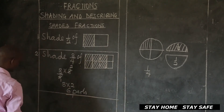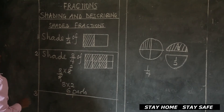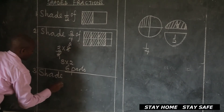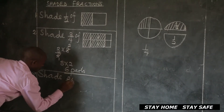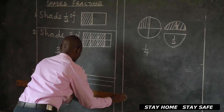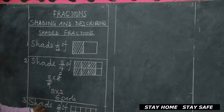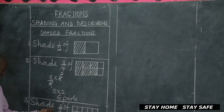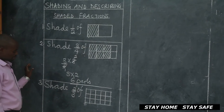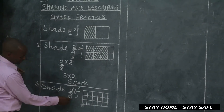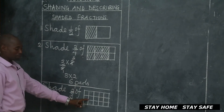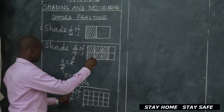Let's look at another example, number three. Somebody may tell you to shade two thirds of the diagram here. Now example number three, we are supposed to shade two out of three of this diagram. The moment the squares are more than the denominator, you first calculate the number of parts which you are supposed to shade.